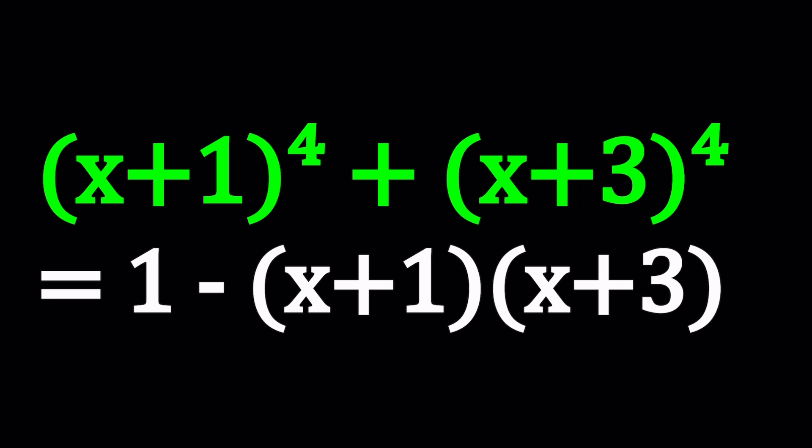We have (x+1) to the fourth power plus (x+3) to the fourth power equals 1 minus the product of (x+1) and (x+3). And we're going to be solving for, guess what? x values.